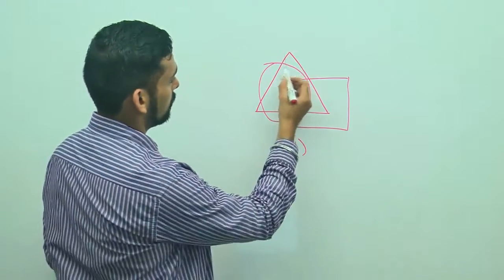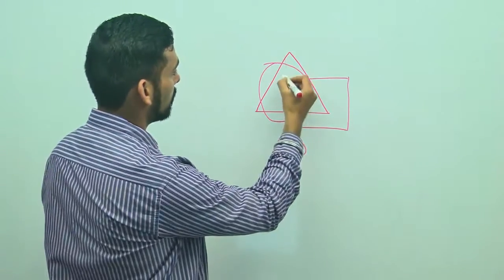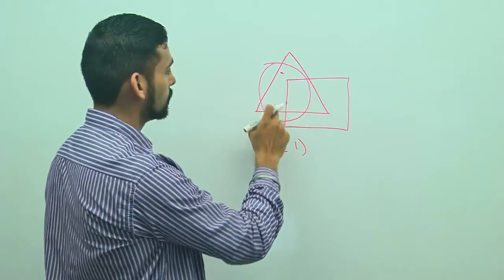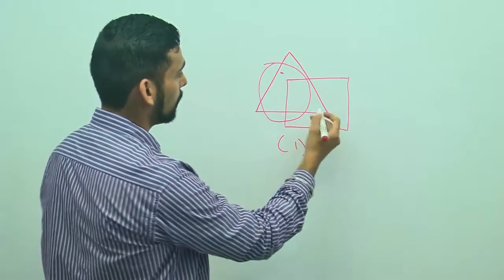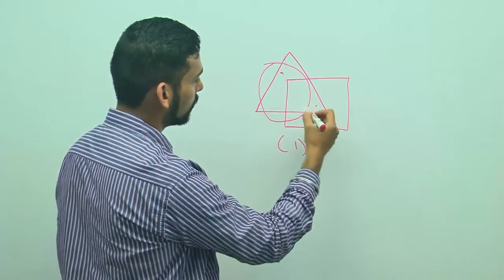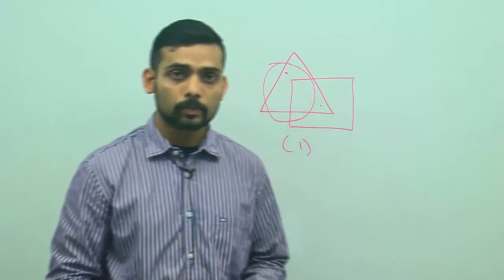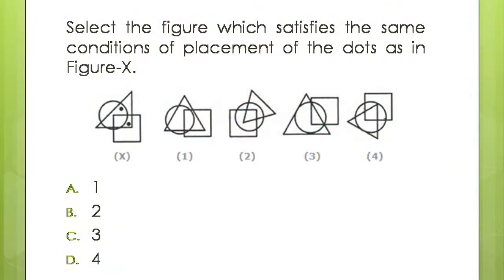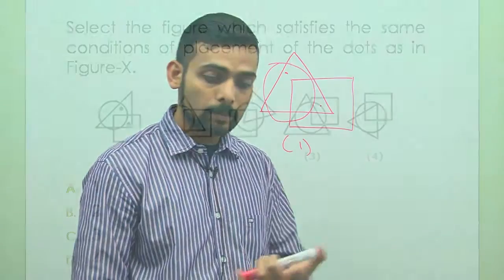Do I have some area which is not covered by the square and is only covered by the triangle and the circle? Of course I have that area on this side. So I can place one dot here, which is covered only by the triangle and the circle. And I will place another dot in the area covered by both the triangle and the square and not covered by the circle. Figures 2, 3 and 4 have no such placement that satisfies both conditions, so my only viable option is figure 1.